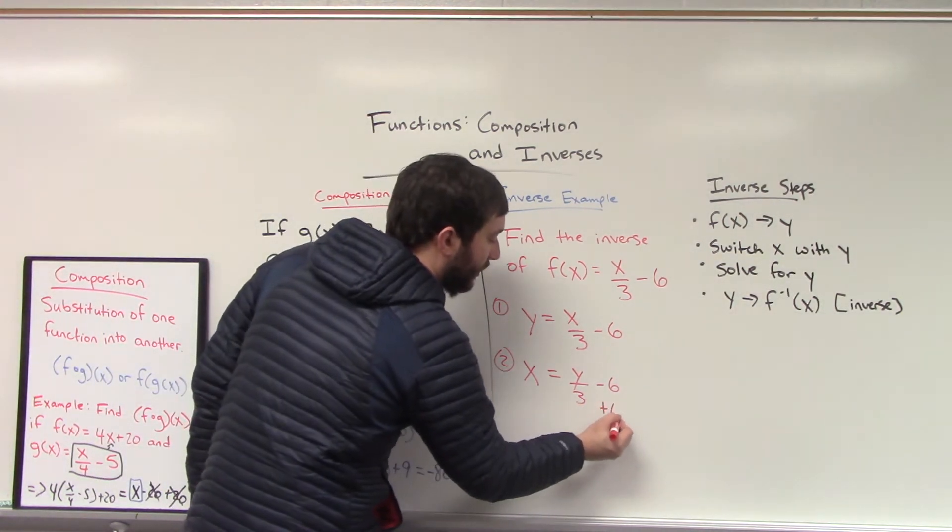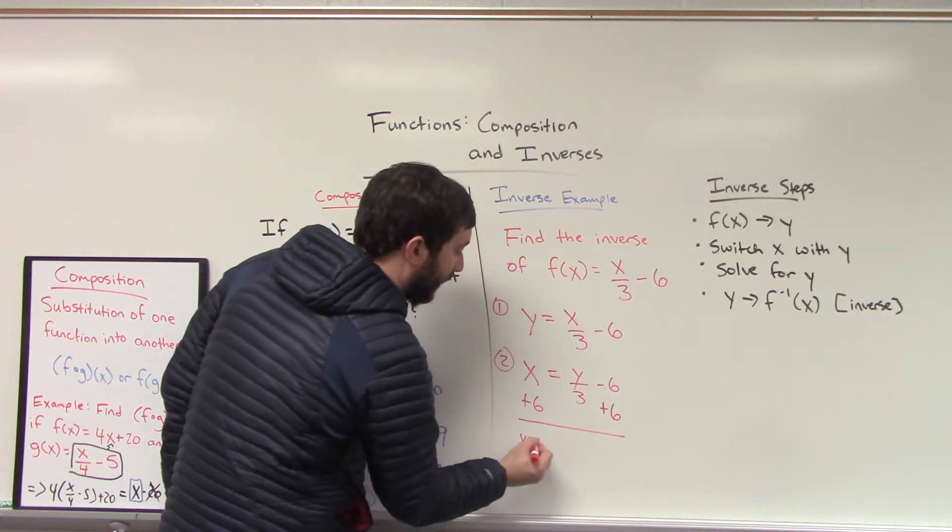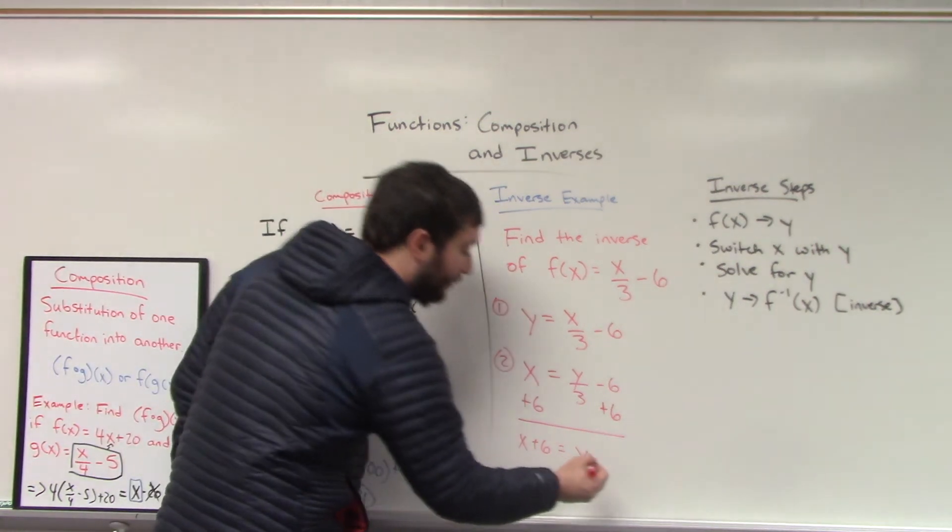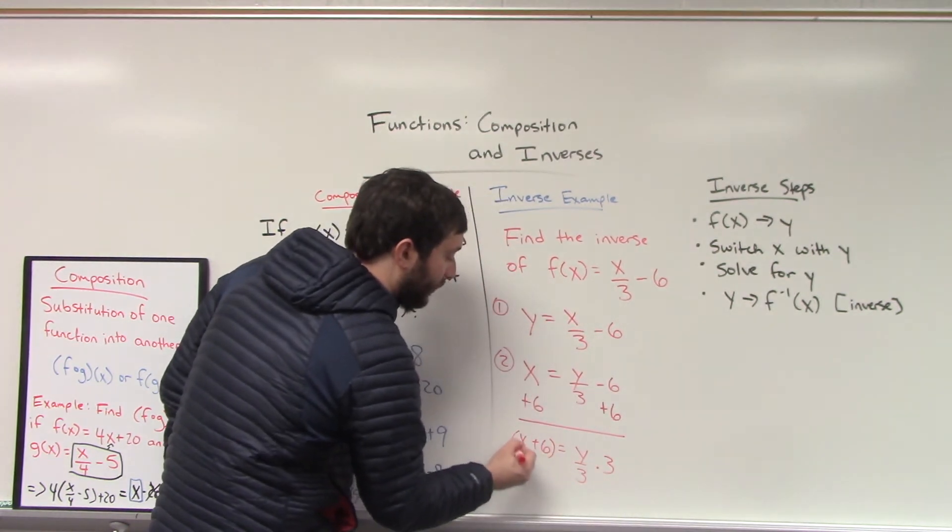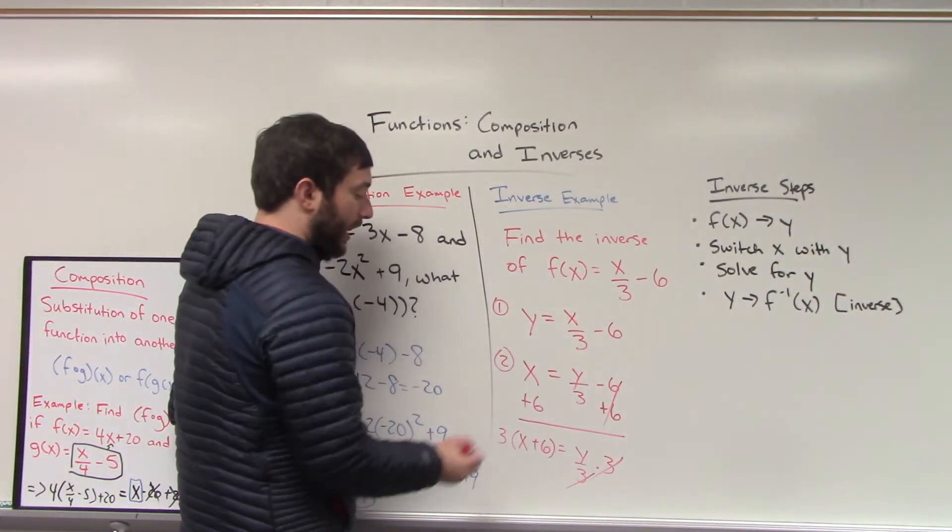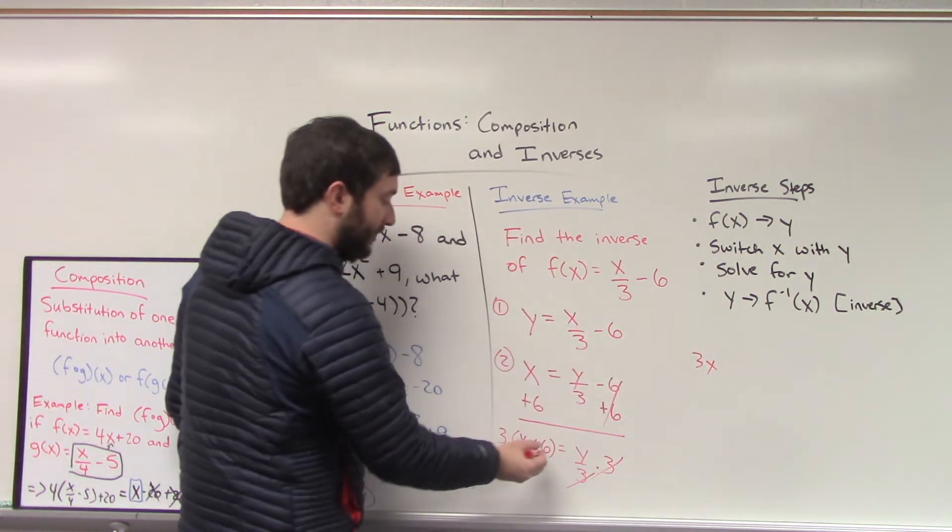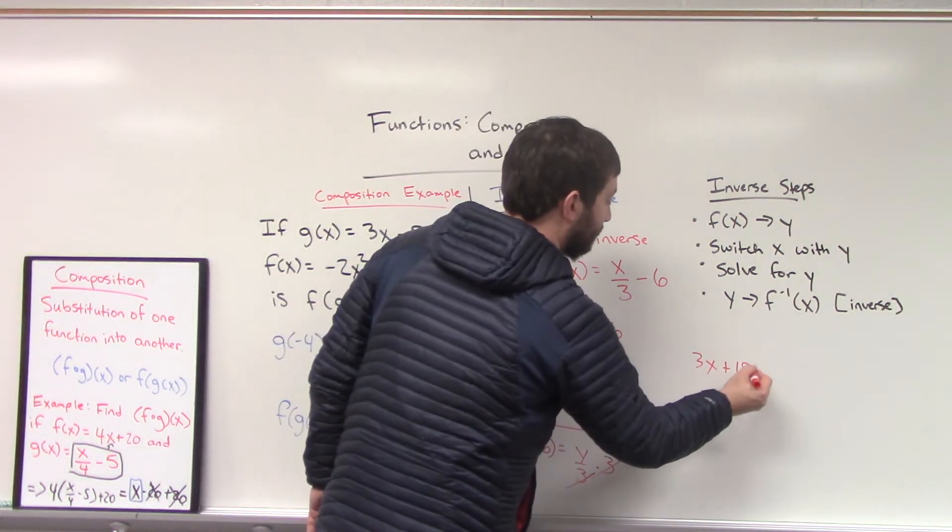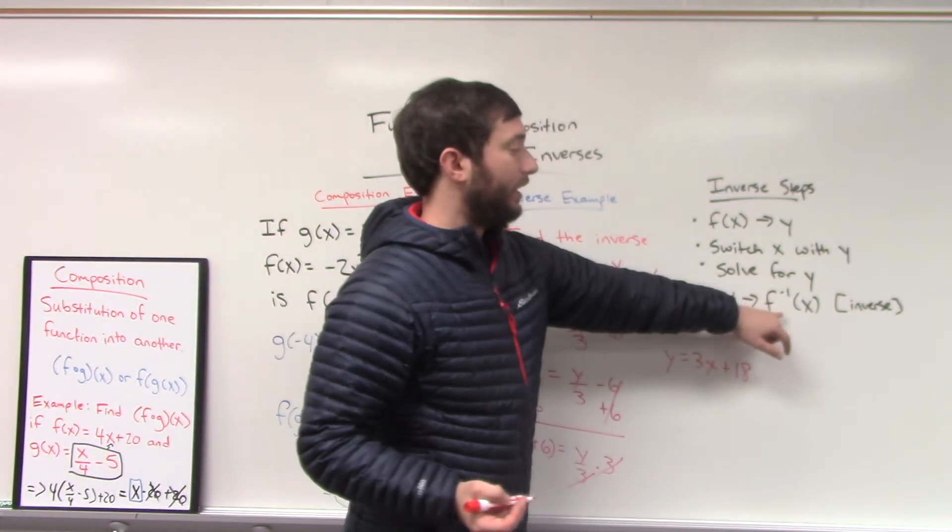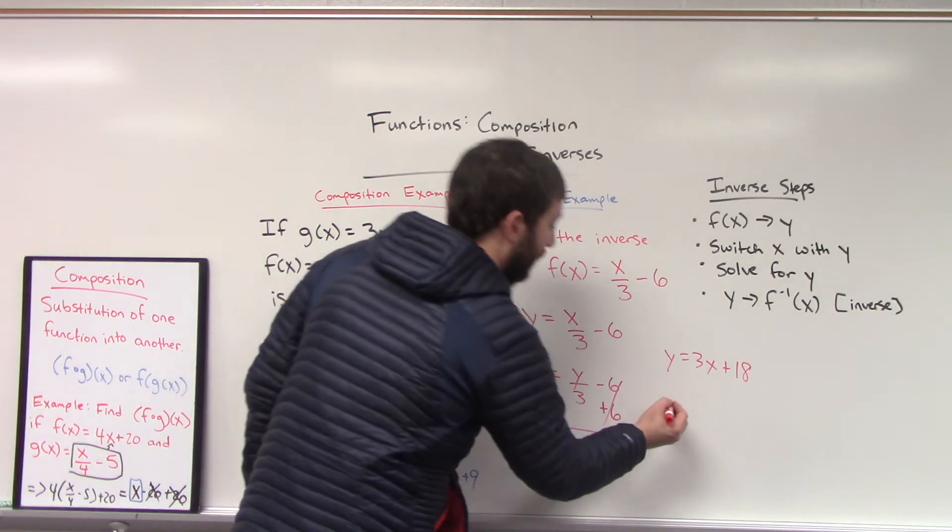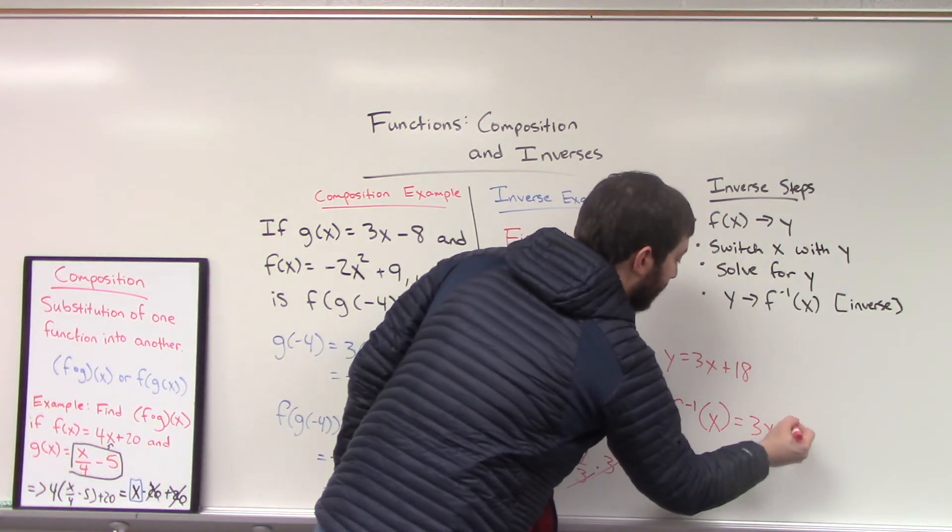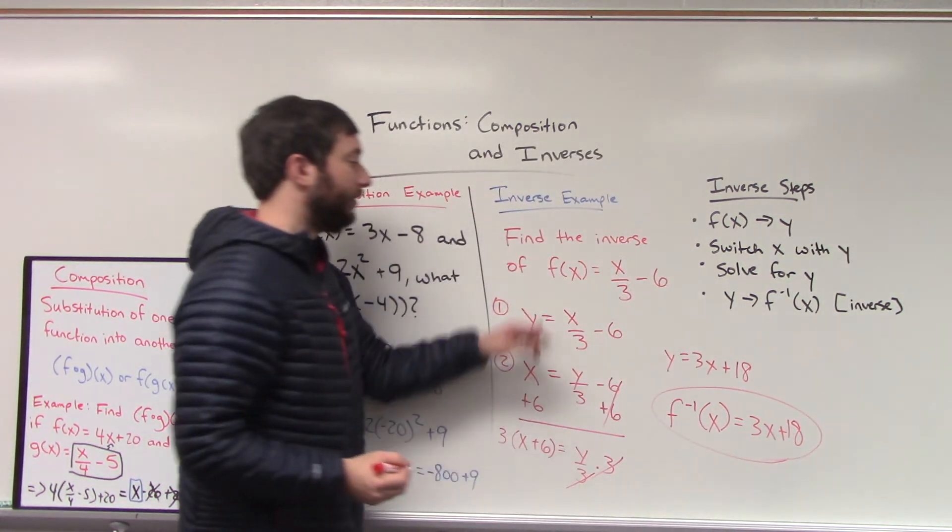We're going to solve for y. This will be how we find our inverse. And we do that by isolating it. So opposite operations, we can add by six to both sides here. X plus six equals y divided by three. Opposite of division is multiplying, so you need to multiply three to both sides. And I would include everything on the left-hand side. Three times x will be 3x. Three times six will be 18. So y equals that result. And at the very end, the notation for an inverse is an f little exponent symbol of negative one of x equals 3x plus 18. This is the inverse of our original problem.